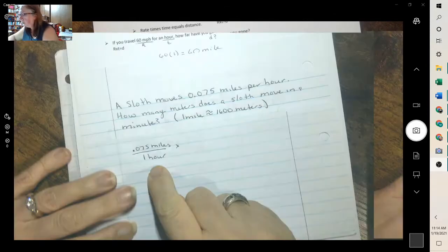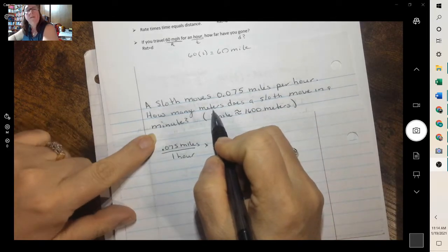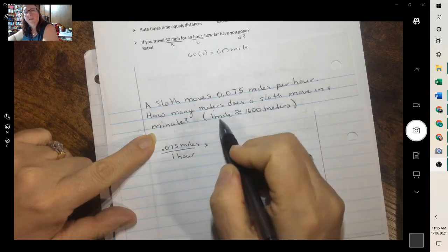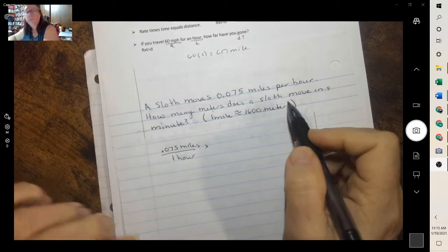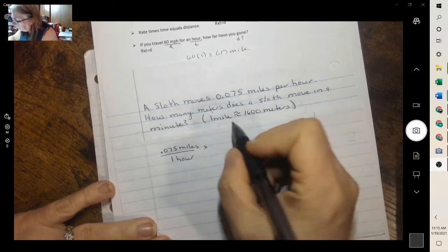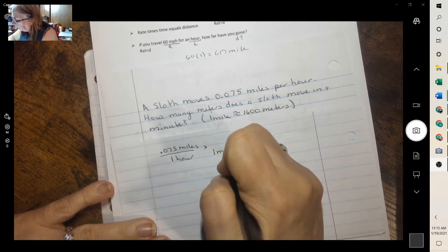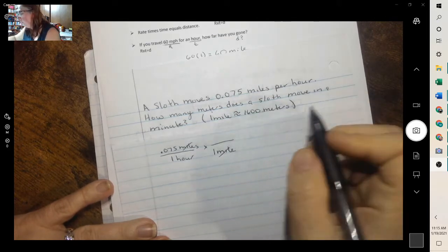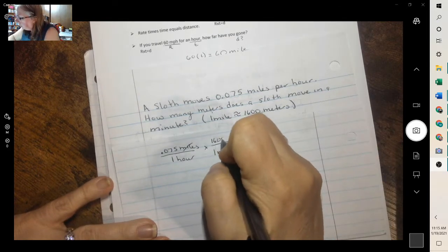So you could use proportions because we have 0.075 miles, and per means divide, one hour. And we want to convert that to meters per minute. Miles, they gave us it. If not, we would Google it. We want to put mile in the bottom so they will cancel, because you cancel one from the top and one from the bottom. 1,600 meters.